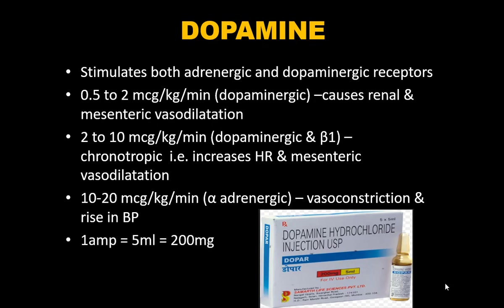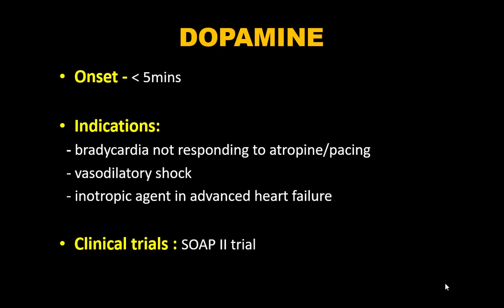Dopamine stimulates both adrenergic and dopaminergic receptors in a dose-dependent manner. At 0.5–2 mcg/kg/min it causes renal and mesenteric vasodilation (the so-called 'renal dose,' now abandoned per SSC guidelines). At 2–10 mcg/kg/min it acts on dopaminergic and beta-1 receptors — chronotropy and increased heart rate. At 10–20 mcg/kg/min it causes vasoconstriction and BP rise. One ampoule contains 5 mL = 200 mg. Onset is less than 5 minutes.